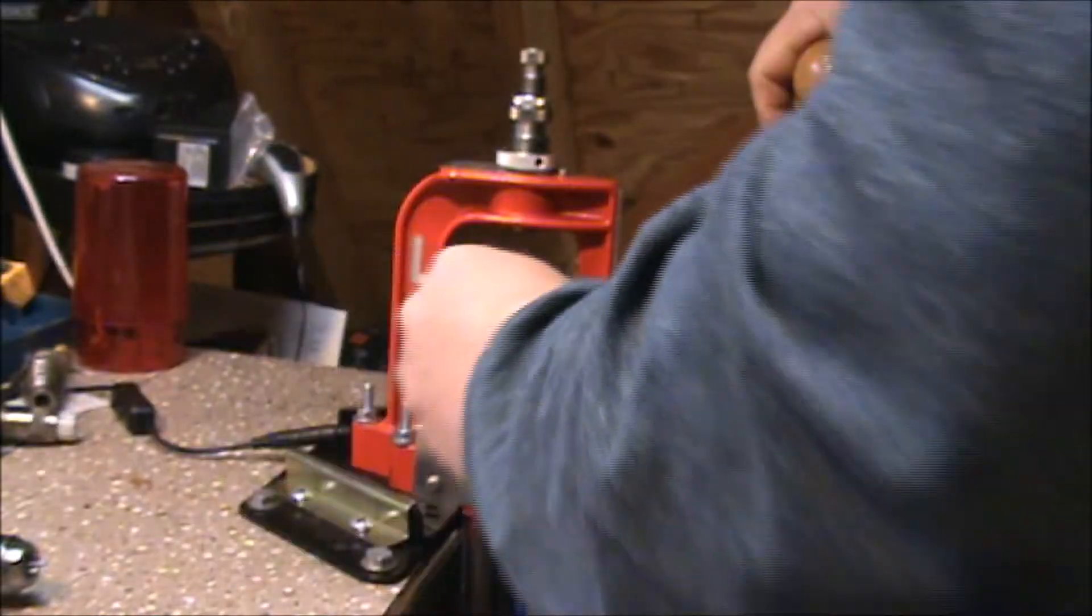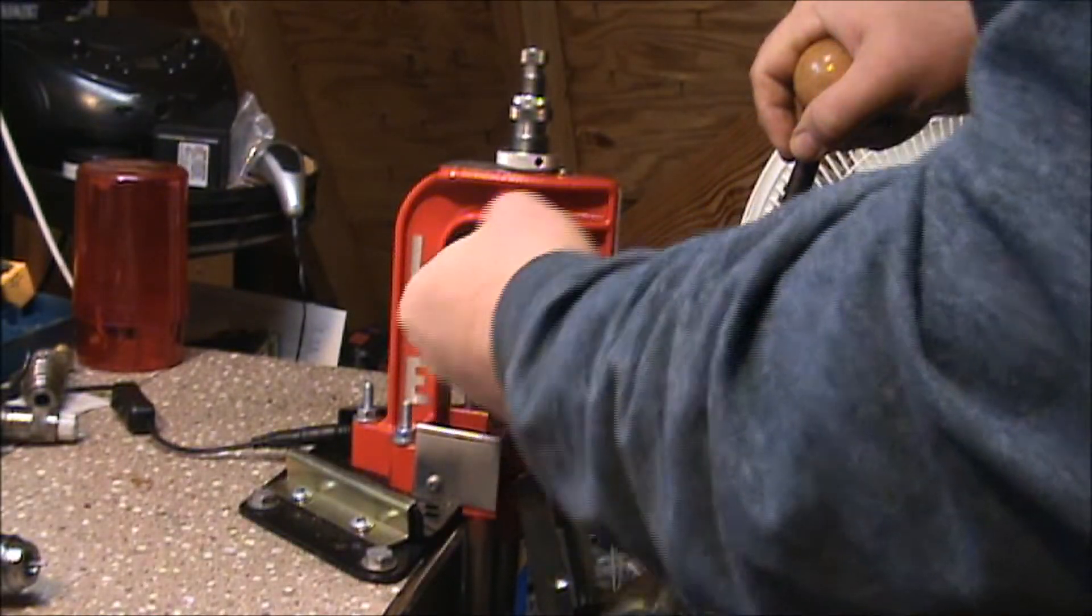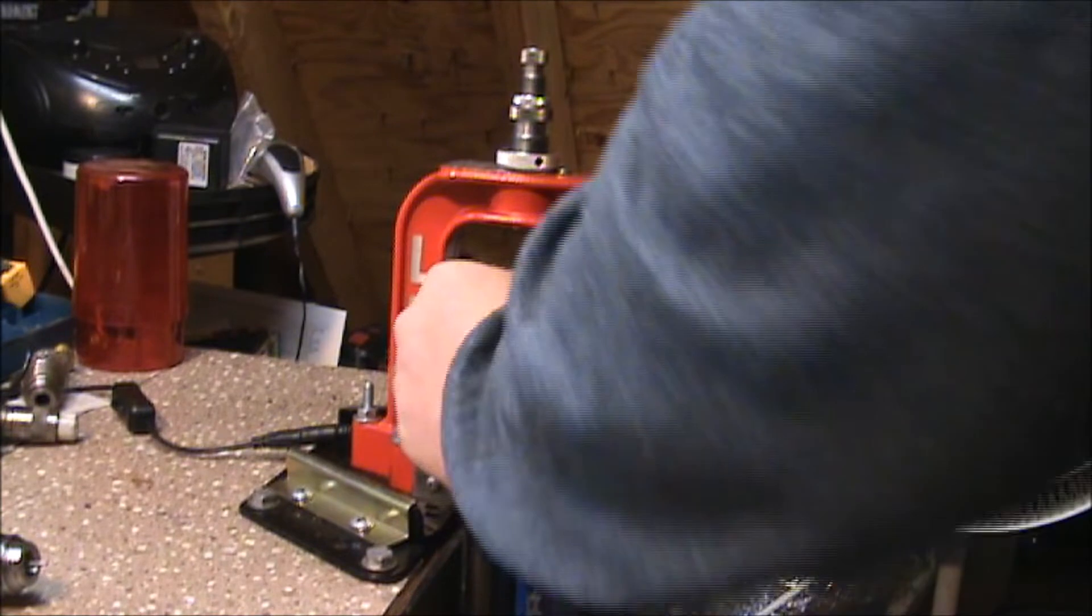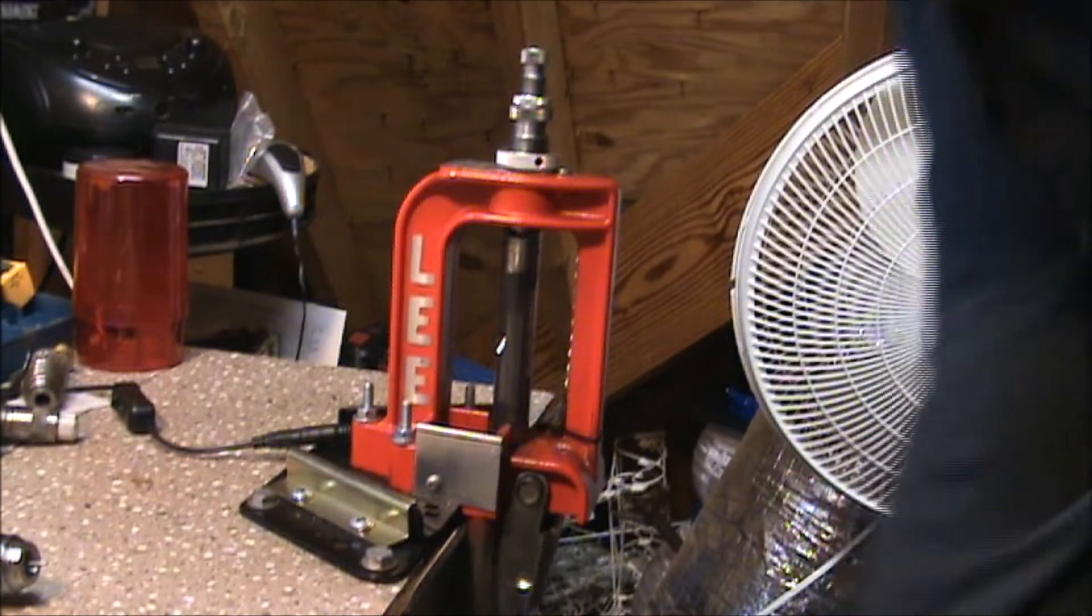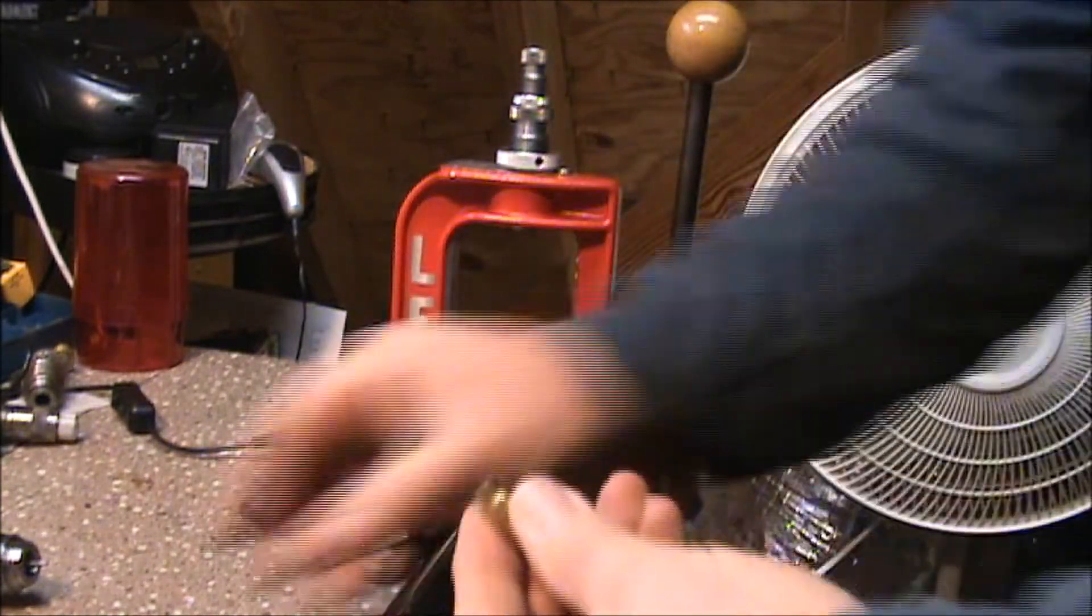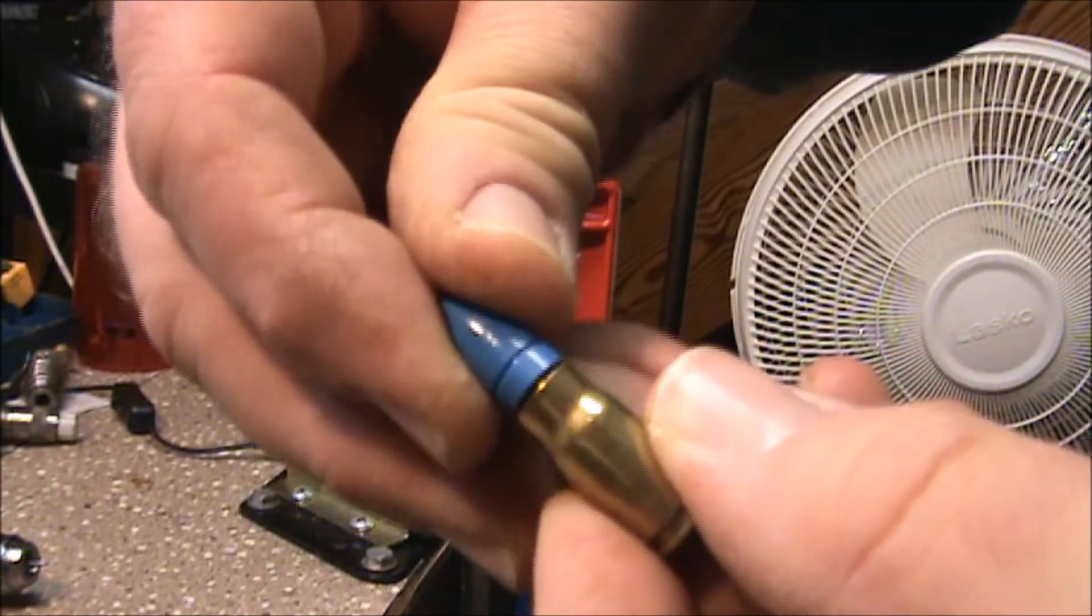Pretty easy to do. If you didn't have that die, you could always get away with using a universal neck die. They make some for pistol calibers. You just have to flare out the mouth just enough to where it accepts a new bullet.